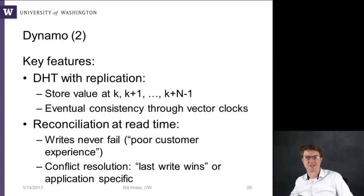So Dynamo, the system, it's a distributed hash table. That's what DHT stands for. And each value is stored at multiple locations for replication purposes, up to a replication factor of n. And so at location k, k plus 1, all the way up to k plus n minus 1. And they achieve eventual consistency through vector clocks, which I'll describe in the next couple of slides.